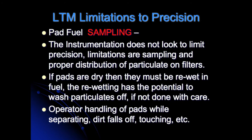What are the light transmission method limitations to precision? Pad fuel sampling is a huge limitation because collecting and sampling the pad properly involves significant human error. The instrumentation does not appear to limit precision. Limitations are sampling and proper distribution of particulate on the filters. If the pads are dry, they must be re-wet in fuel, and re-wetting has the potential to wash particulates off if not done with care. Operator handling of pads while separating — dirt falls off, touching, etc. — means the largest limitation to precision is the preparation of the sample pads, which is the exact same limitation shared by all other test methods.